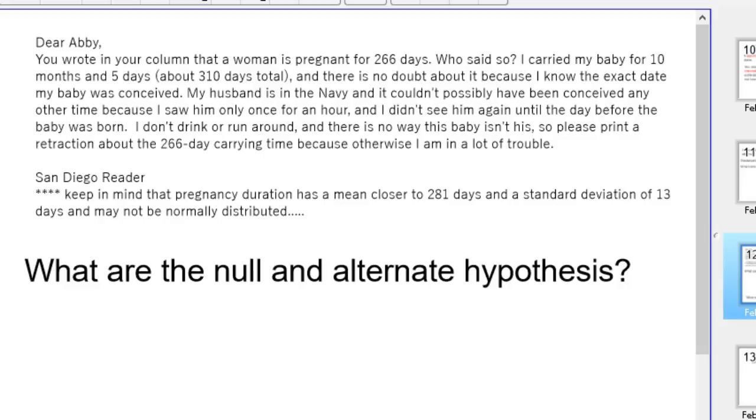Signed, San Diego Reader. I've done some research on this with the internet, and it looks like even Google says that the pregnancy duration has a mean closer to 281 days with a standard deviation of 13 days, and this may not be a normal distribution. For now, all we have is the problem above.